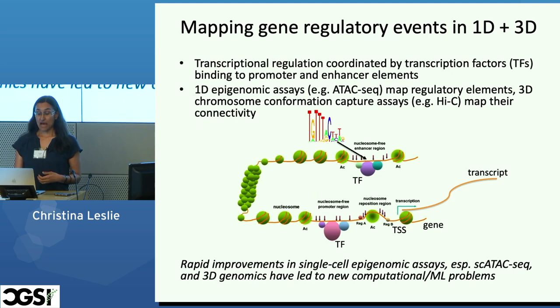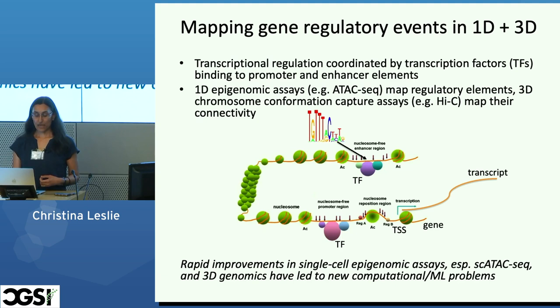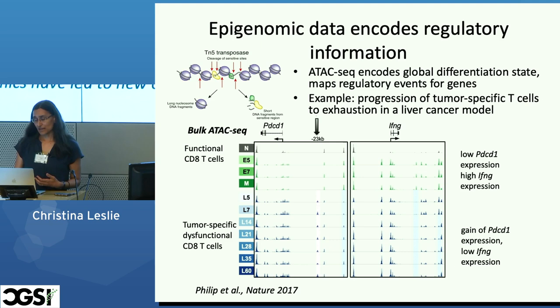This is all happening in a cell-type-specific fashion, turning on different genes in different cell types. Transcription factors recognize cognate sites in the genome, and we often represent them by a binding motif. We now have great techniques — both 1D epigenomic assays and 3D genomic assays — to map this regulatory landscape. I'm going to talk about ATAC-seq and single-cell ATAC-seq for mapping these regulatory loci, as well as Hi-C for understanding the 3D connectivity of chromatin in the nucleus. As these data types have become more widely available and better in quality, it allows us to tackle new problems with machine learning to decipher gene regulation.